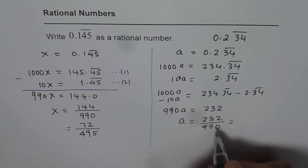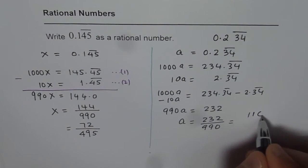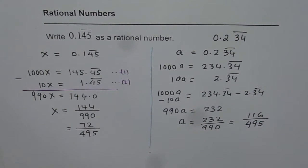Since both are even, you can divide by 2 and simplify. So you get 116. Here you get 495. So that becomes your rational number which is equivalent to a repeating decimal.